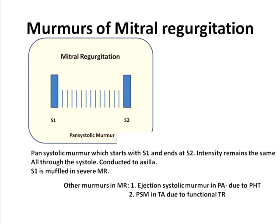Other murmurs which you may hear in mitral regurgitation include an ejection systolic murmur in the pulmonary area due to pulmonary hypertension, and a pansystolic murmur in the tricuspid area due to functional tricuspid regurgitation.